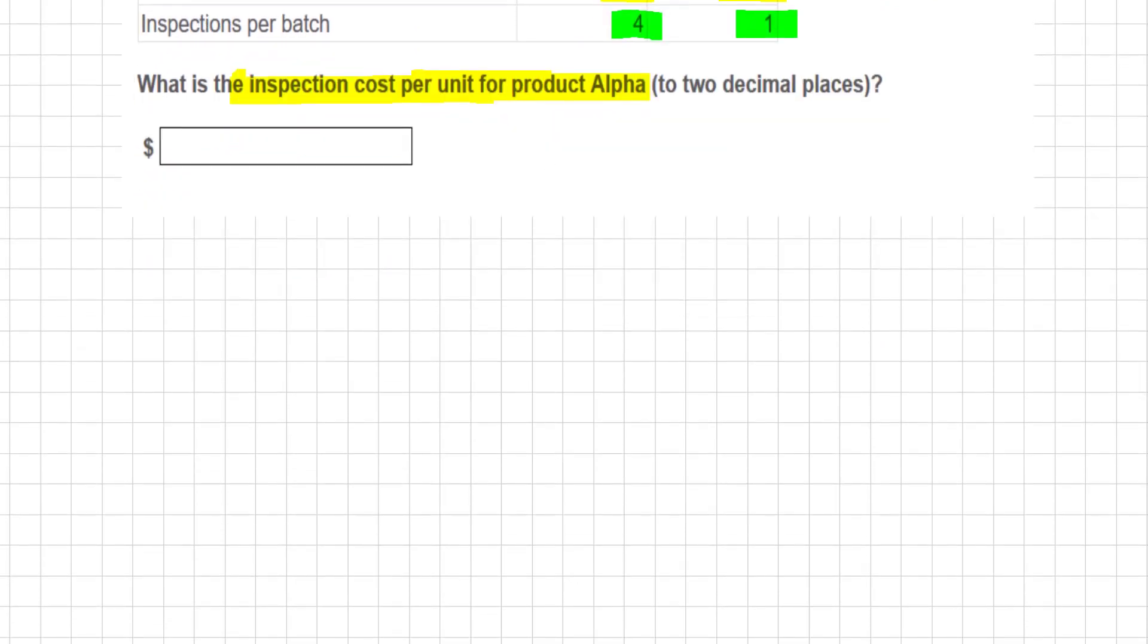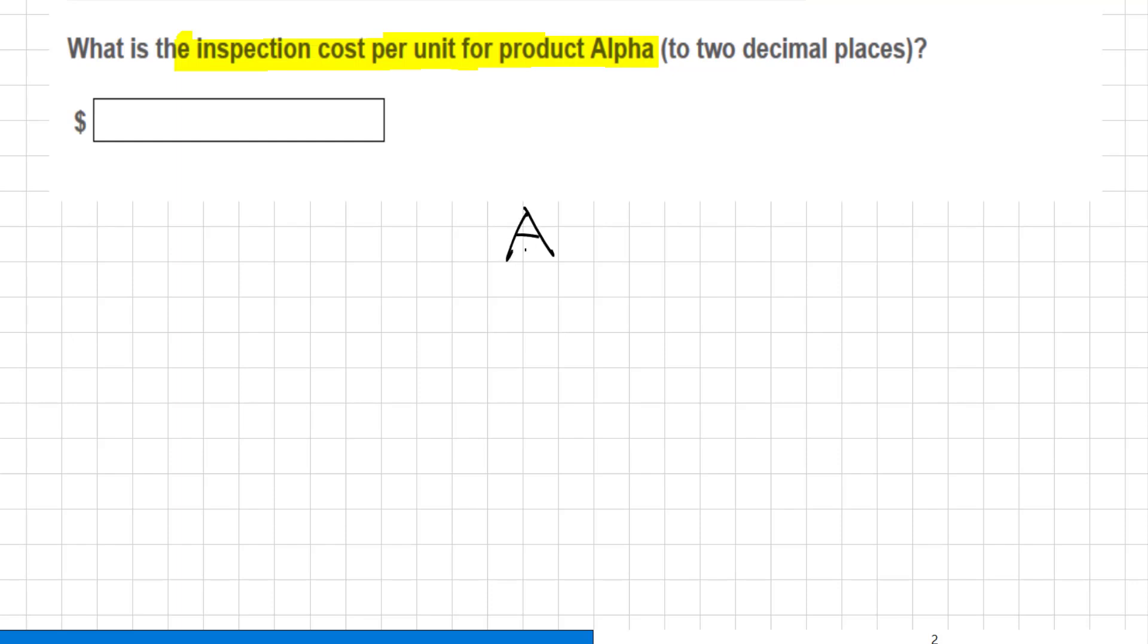We have everybody, we have the alpha, we have the zeta. Okay, and we're looking for the number of inspections. So for the alpha, it's going to be 2,500 divided by 500 multiplied by 4.